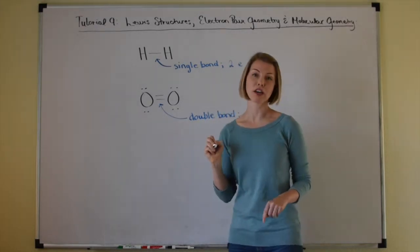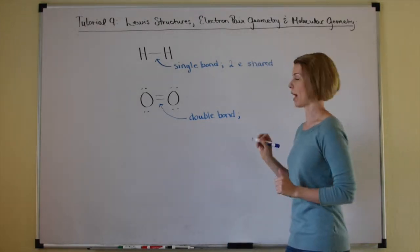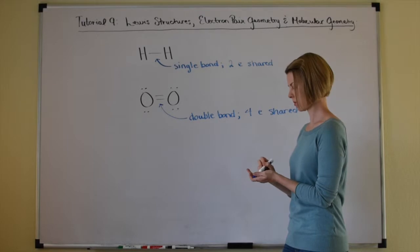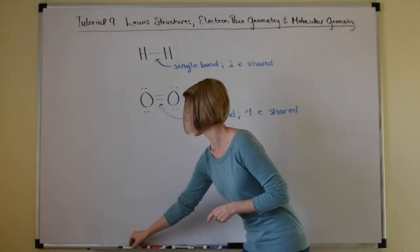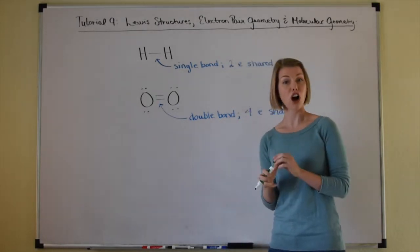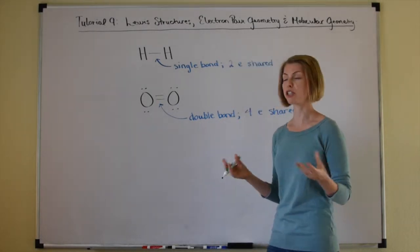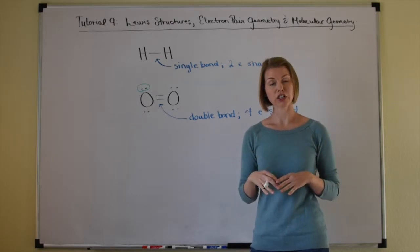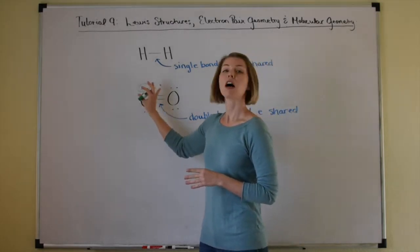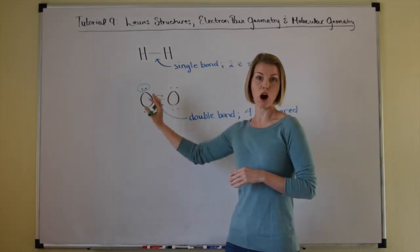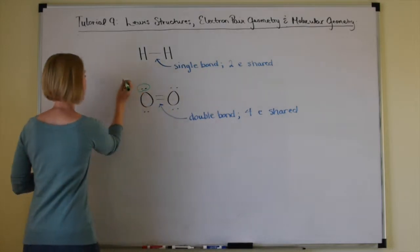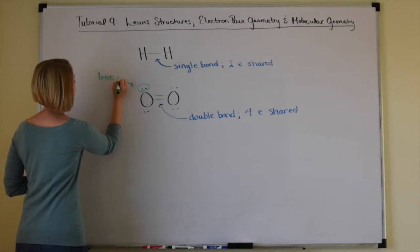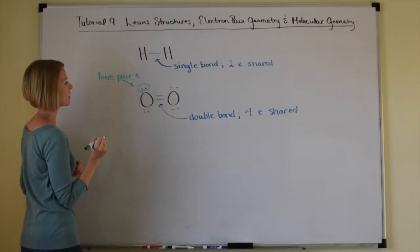A double bond represents four electrons being shared between those two atoms. Let's talk about these pairs of dots for the diatomic molecule oxygen — these represent electrons that are not being shared with another atom. They are left to the oxygen alone, not shared between the two oxygen atoms, and we call these lone pair electrons.